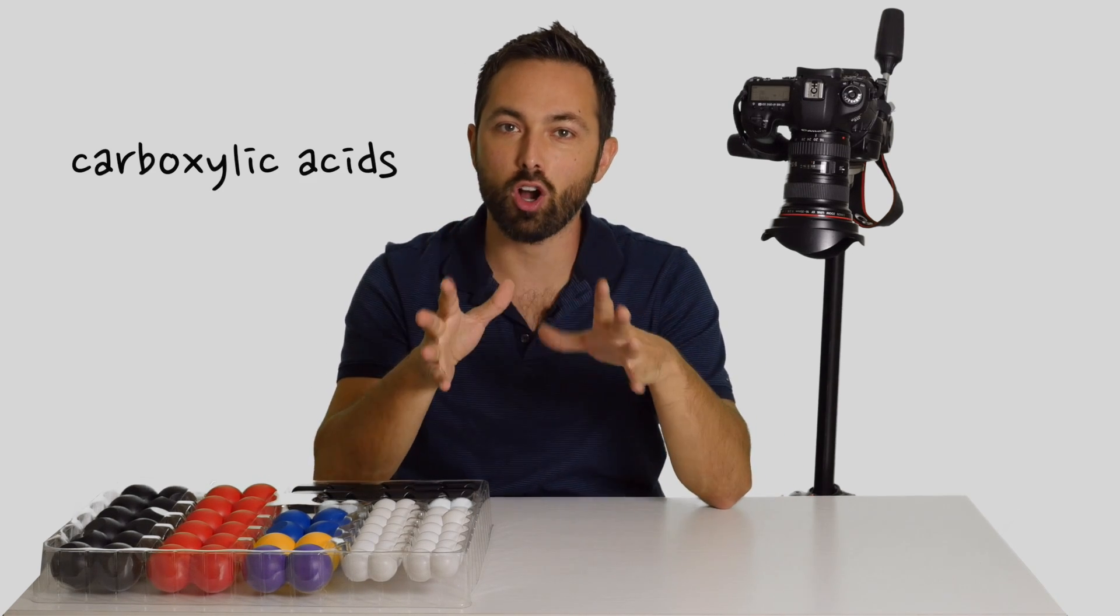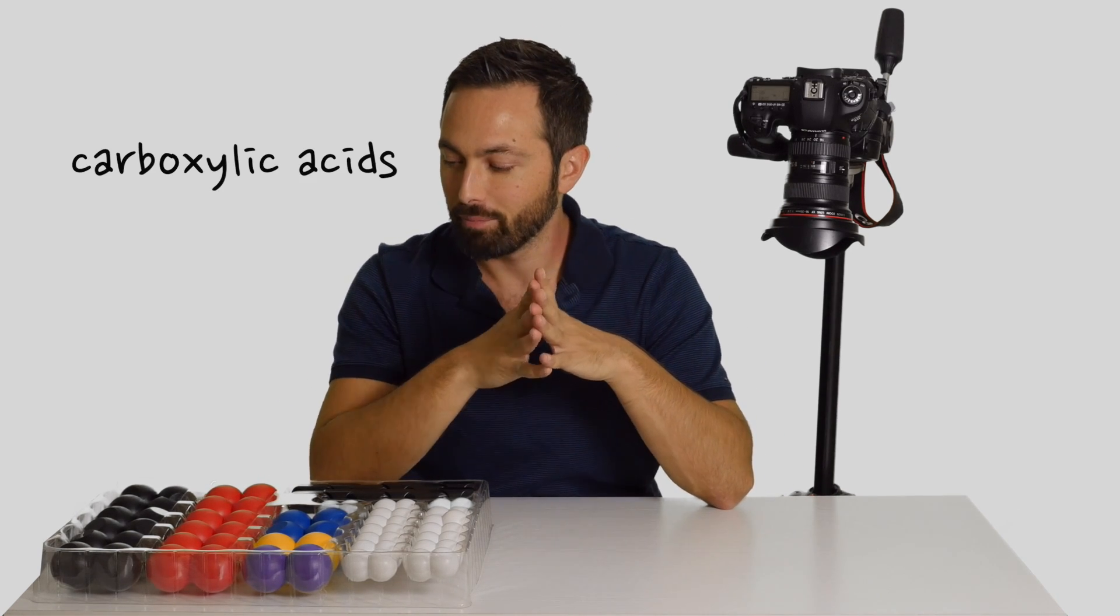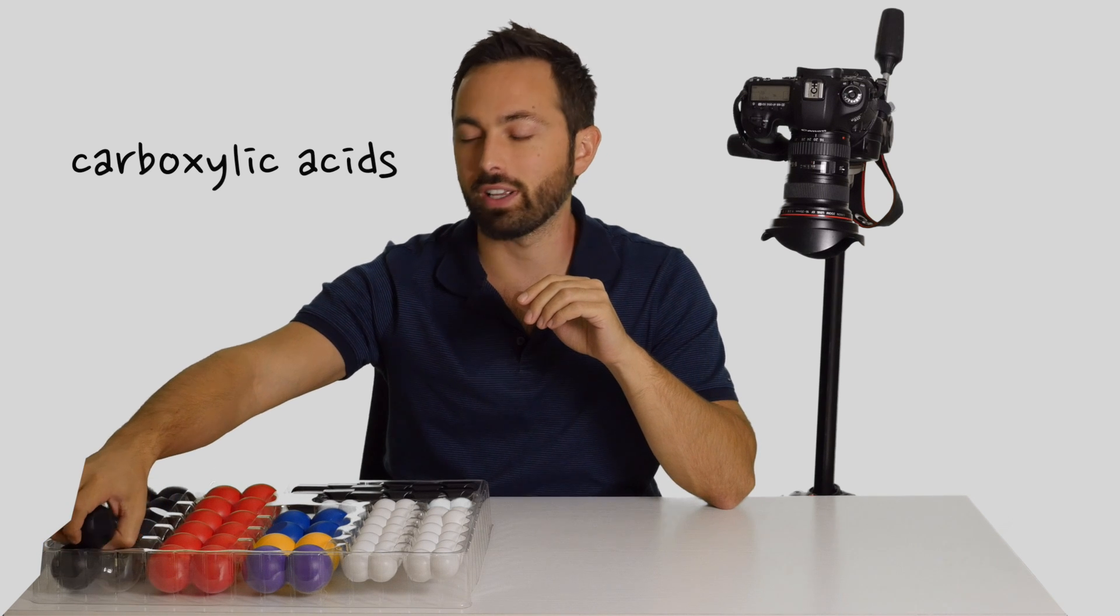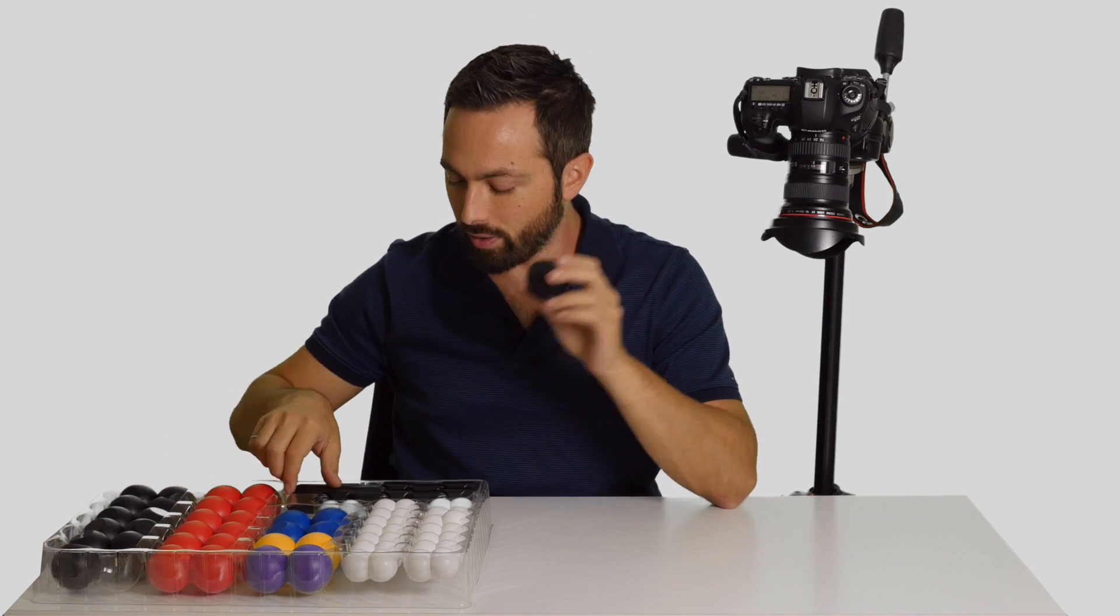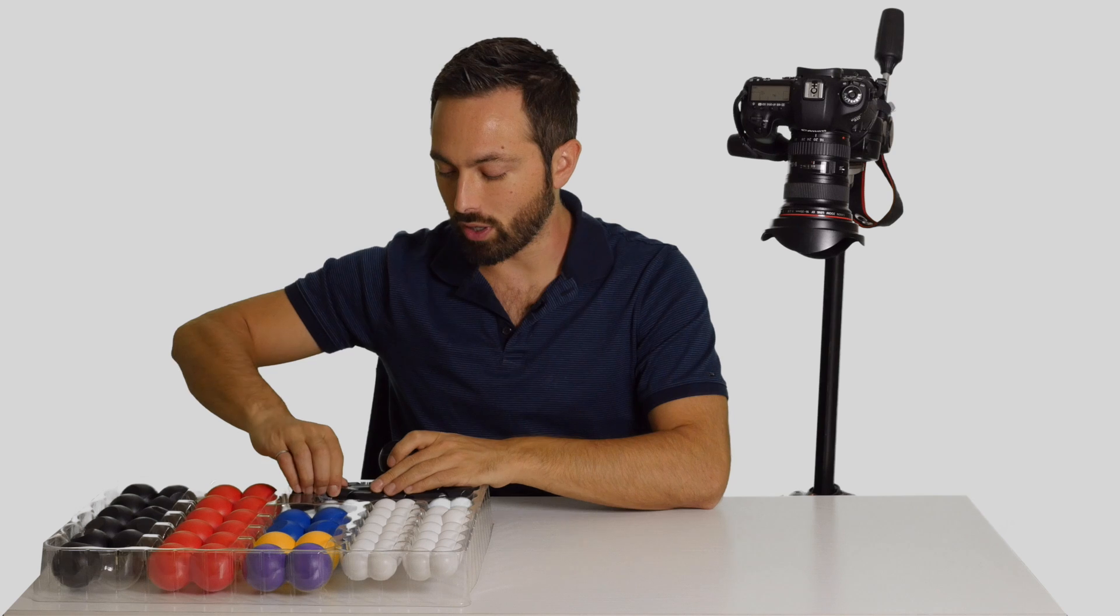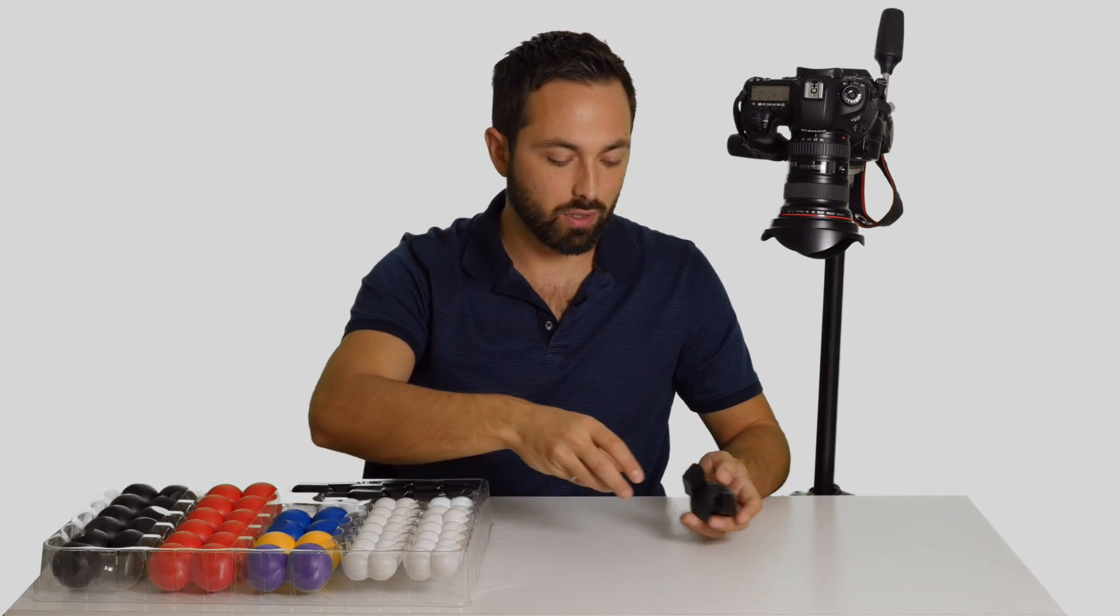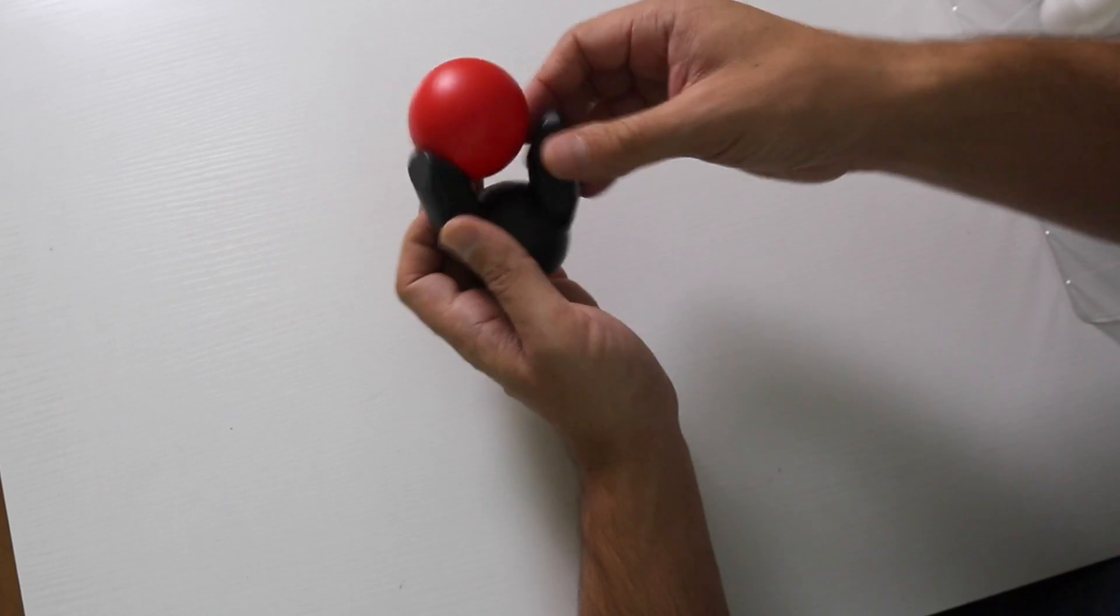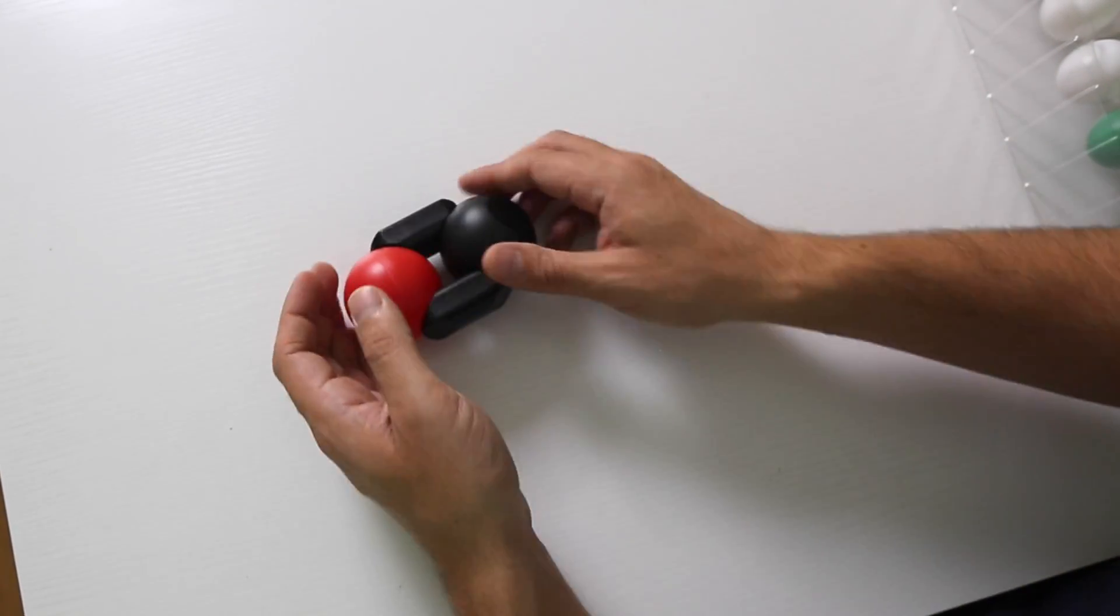Another class of molecules are the carboxylic acids. So what makes a carboxylic acid is a carbon which is double bonded to an oxygen atom. Let me double bond it. Like so.